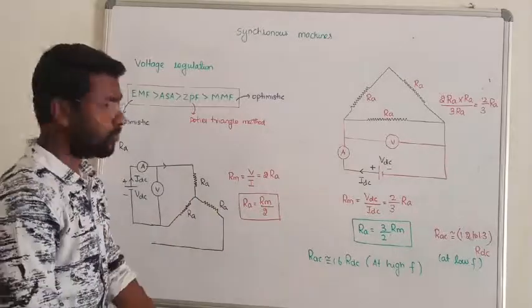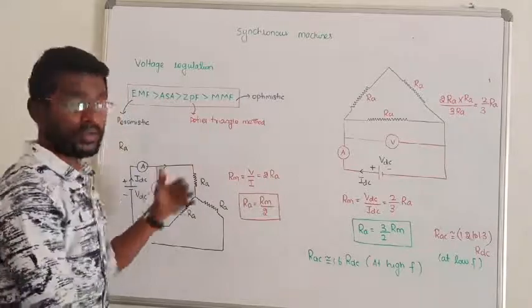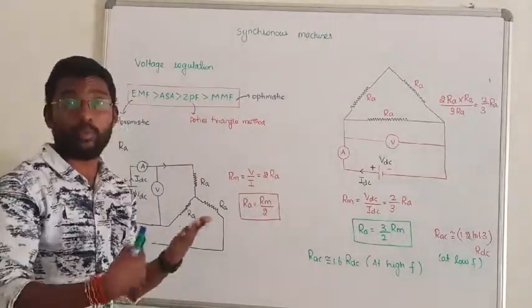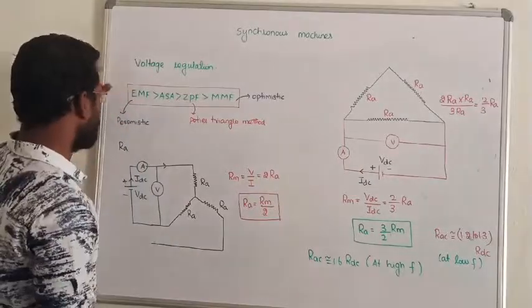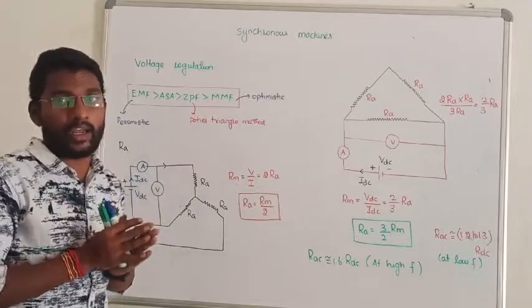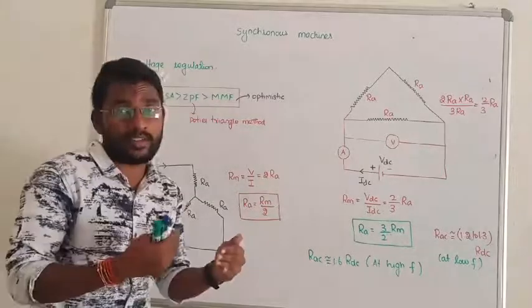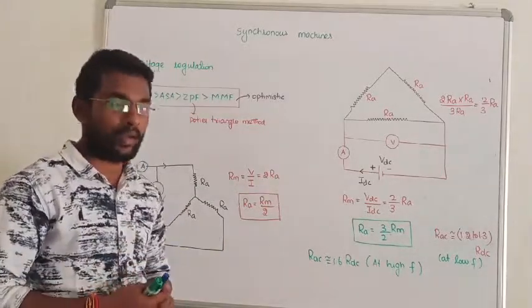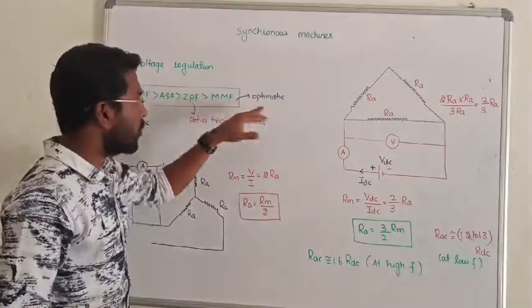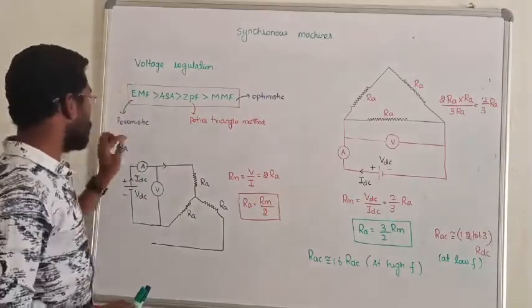There are 4 methods. We will solve the EMF method first. MMF is the optimistic method, EMF is the pessimistic method, and ZPF is another method. ASA and ZPF are the more advanced methods among the four.